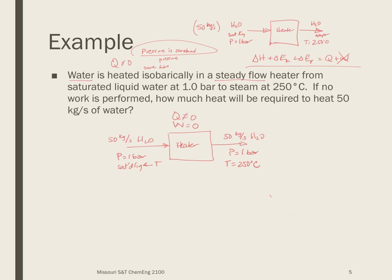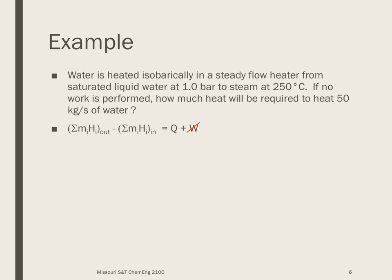I know if I look at my first law or my energy balance, W is zero. I'm going to assume that kinetic and potential energy are also zero. And so I'm left with Q is equal to delta H. So Q is equal to delta H. Delta H in this case is going to be the enthalpy out minus the enthalpy in. And I need to find mass flow rates, which I know, right? This is going to be my mass flow rate both in and out. I need to find the enthalpies. And then that will allow me to find Q.